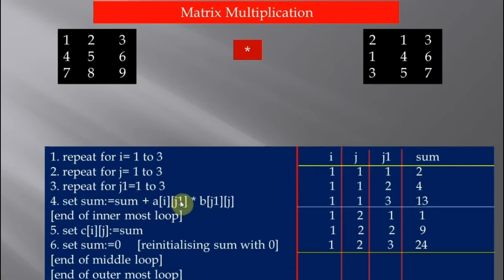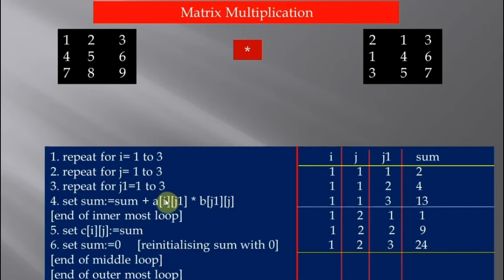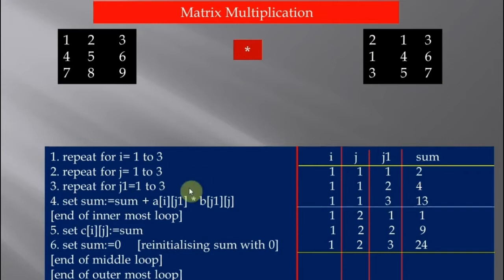The initial value of sum is 0, and since subscripts start at 1 in this algorithm, we compute 0 plus a11 multiplied by b11. What is a11? It is 1. What is b11? It is 2. So 0 plus 2 gives a new value of sum equal to 2.